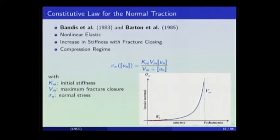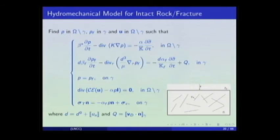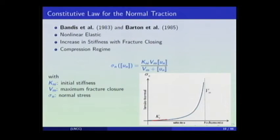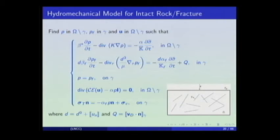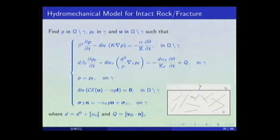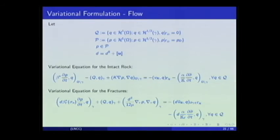We show a graph of the Barton-Bandis equation using absolute-value variables. It includes the initial stiffness and the maximum fracture closure — the maximum amount a fracture can close. With this we obtain the complete system for intact rock and fractures: the parabolic equations, the poroelasticity equation, continuity of pressure, and traction continuity. The aperture of the fracture depends on the displacement jump occurring at the fracture.